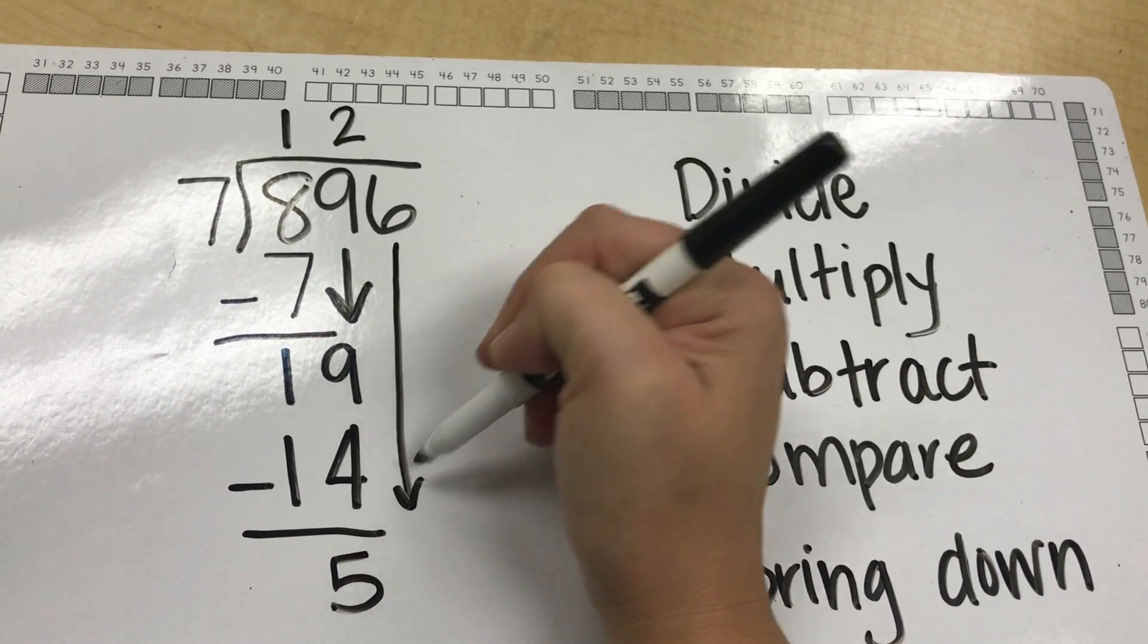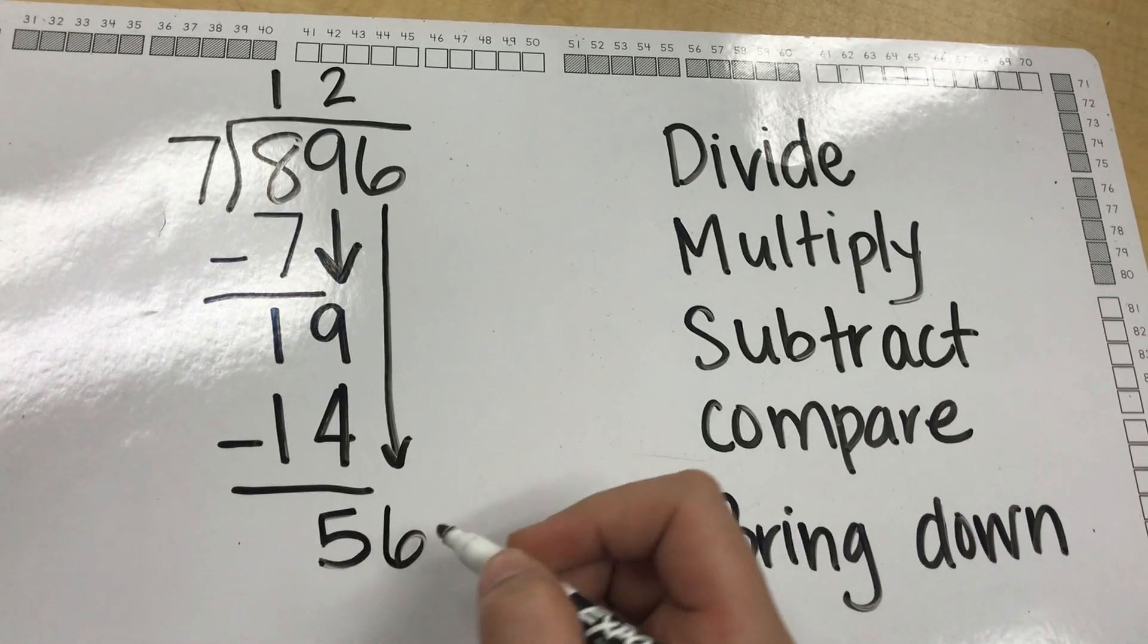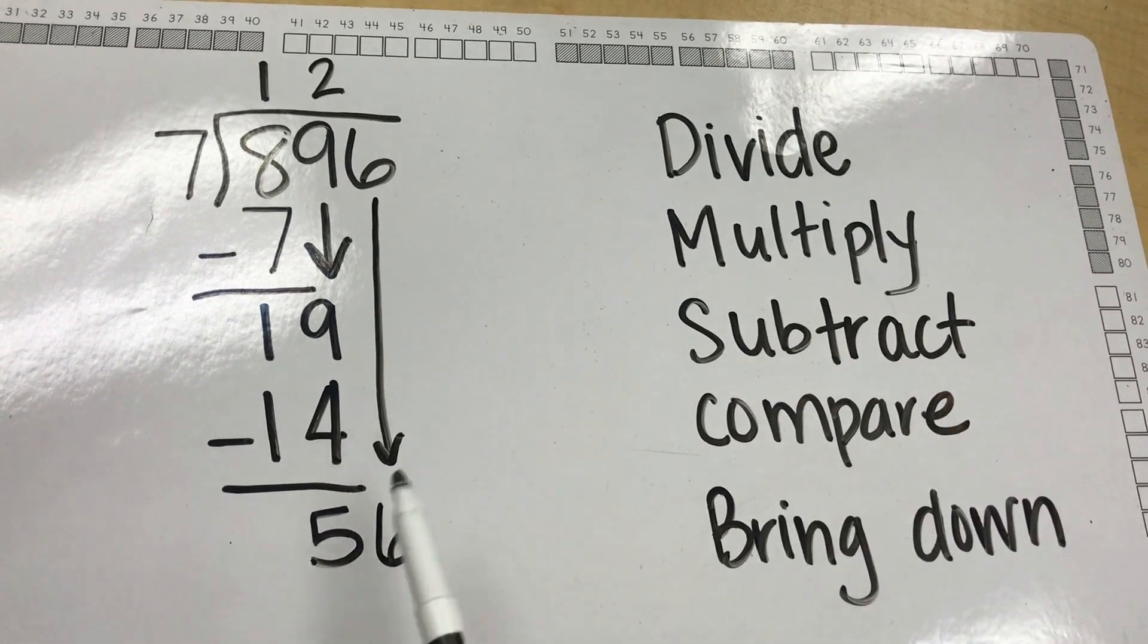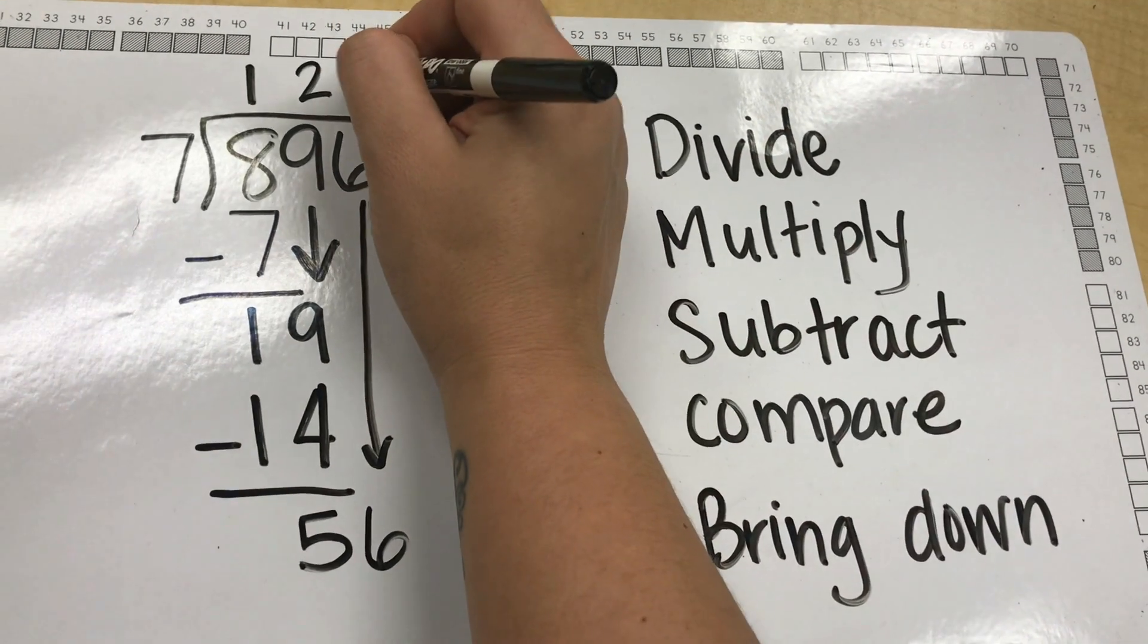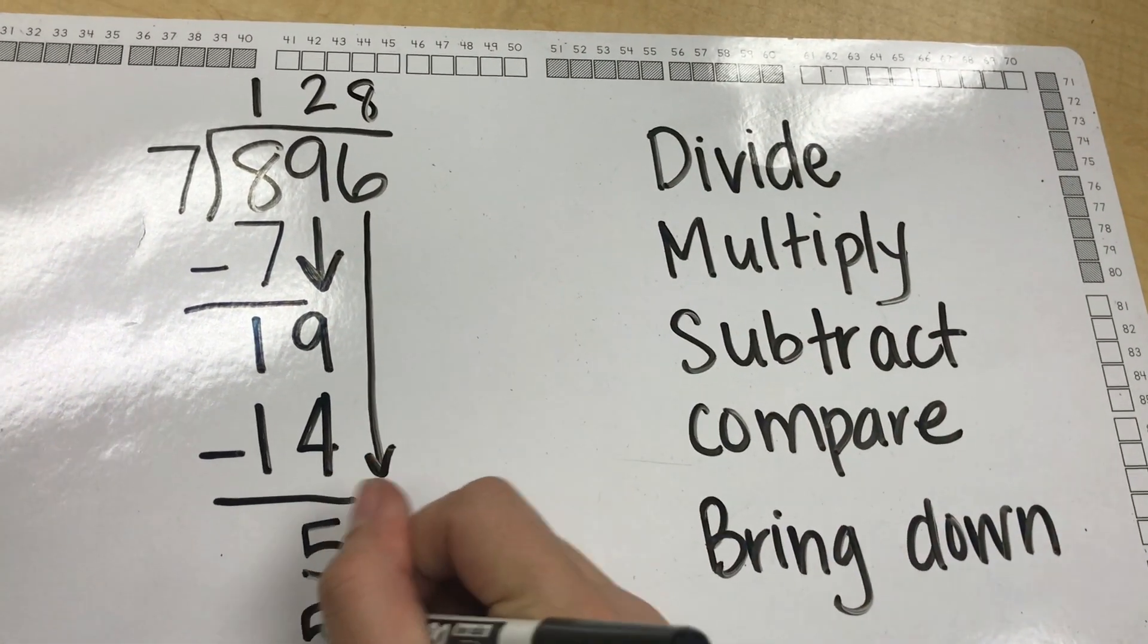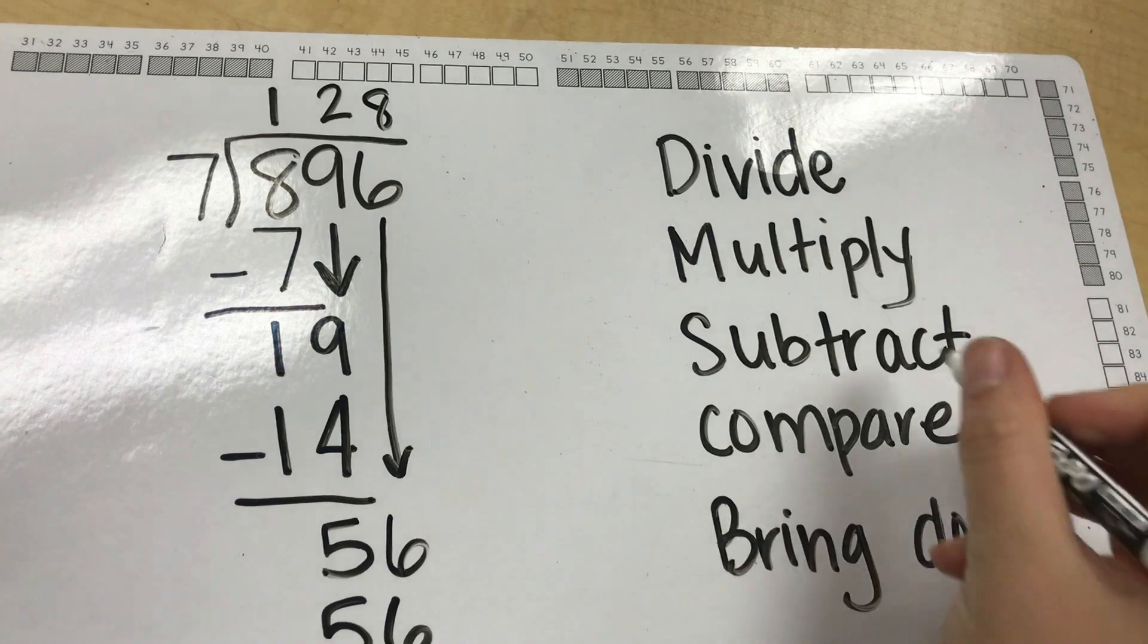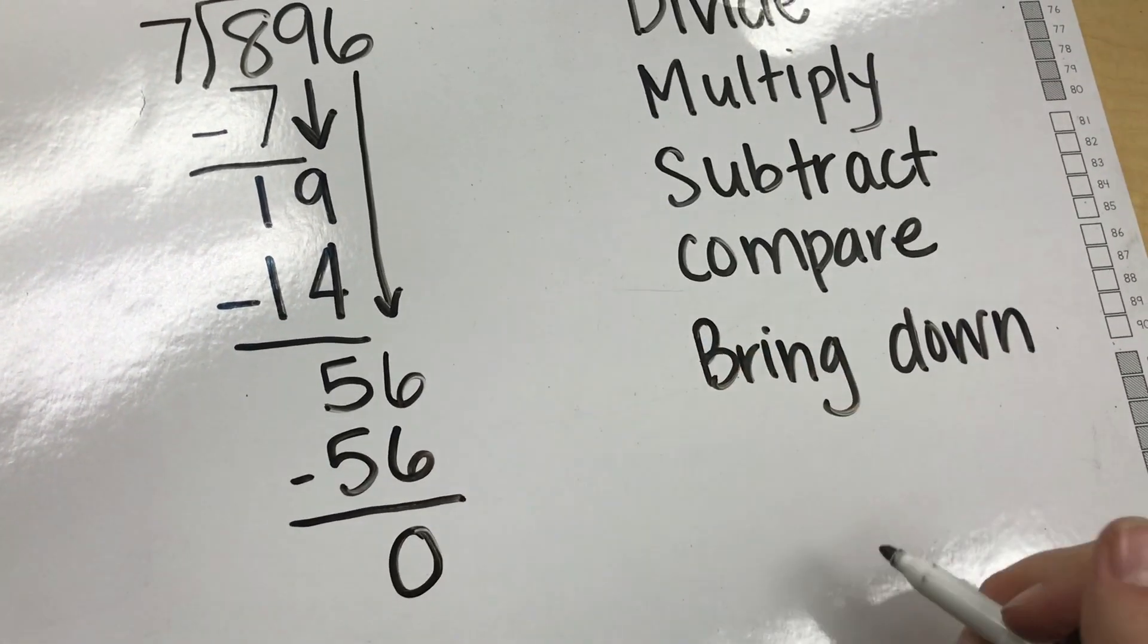I now go on to my last step which is to bring down. I bring down my 6 and now I divide 56 by 7. Well that's an easy one. The answer is 8 because 8 times 7, doing my second step, gives me 56. Go on to my next step and I must now subtract and I am left with 0.